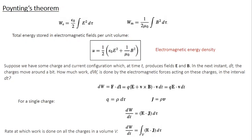Assume that you have some volume V surrounded by a boundary surface S, and you have some charge and current configuration inside this volume. Let E be the electric field associated with the configuration and B be the magnetic field associated with the configuration. If the charges move a bit, the question is: what is the work done by the electromagnetic force on the charges? So if you take a time interval dT, you need to calculate the corresponding work done dW.